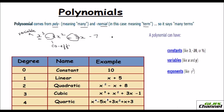A polynomial can also have constants — for example, 7 is a constant because its value doesn't change. It can have variables like x, y, z, and also exponents like x cubed or x squared. You should remember that exponents in a polynomial can be positive numbers only; negative exponents are not allowed.